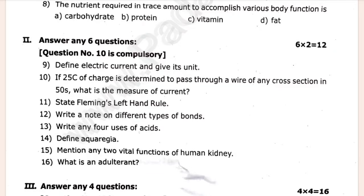If 25C of charge is determined to pass through a wire of any cross section in 50S, what is the measure of current averaging?